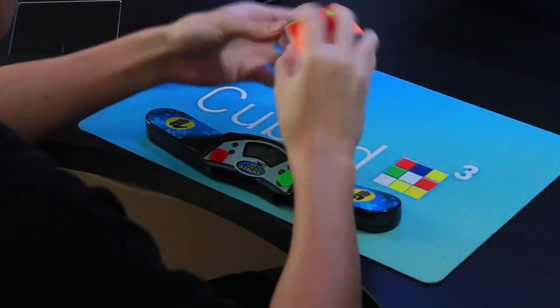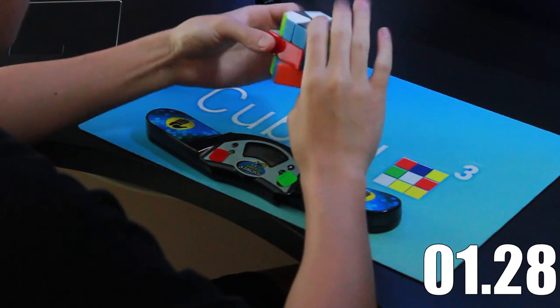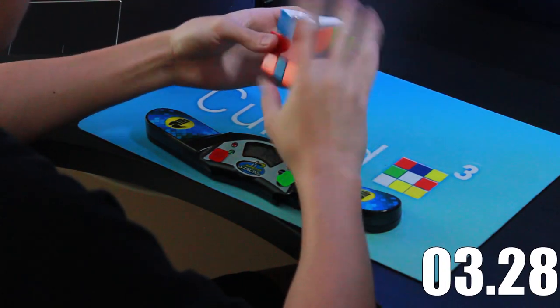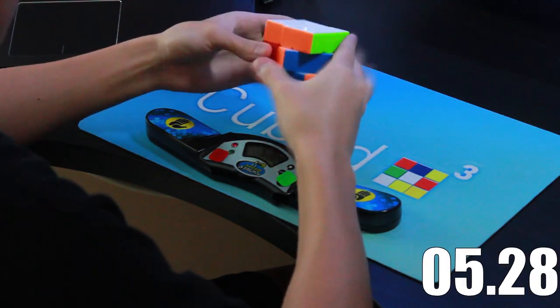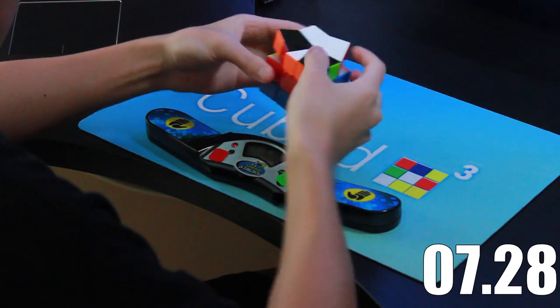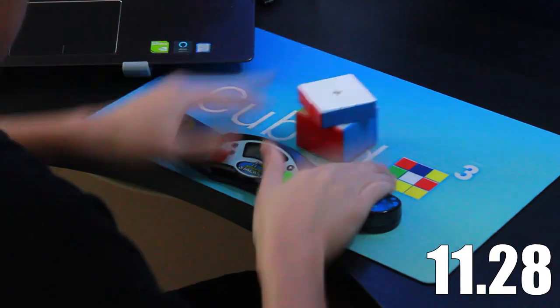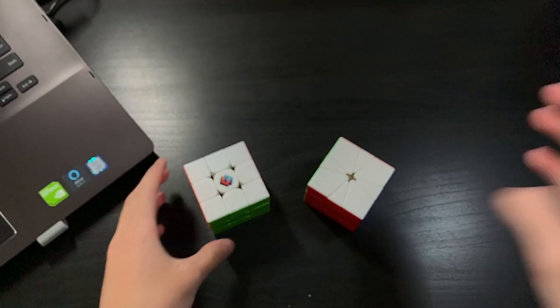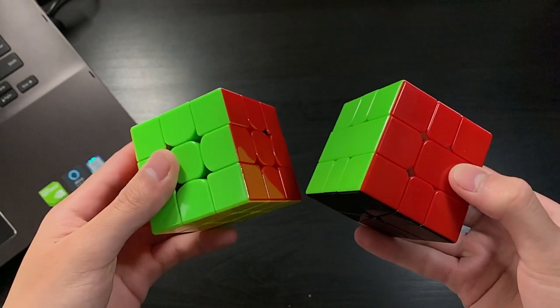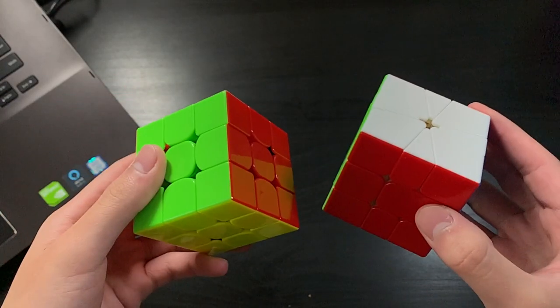One of the essential ALG sets needed in order to get relatively fast at this event is EP, or edge permutation. These algorithms are used on the last step of a square one solve in order to move around or permutate the edges of the cube into their solved positions. This step can kind of be seen like EPLLs on 3x3, but now on the top and bottom layers.